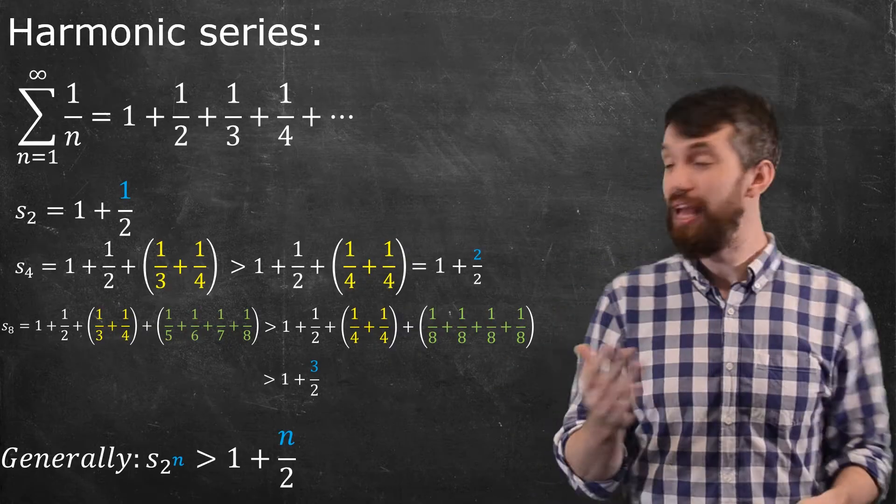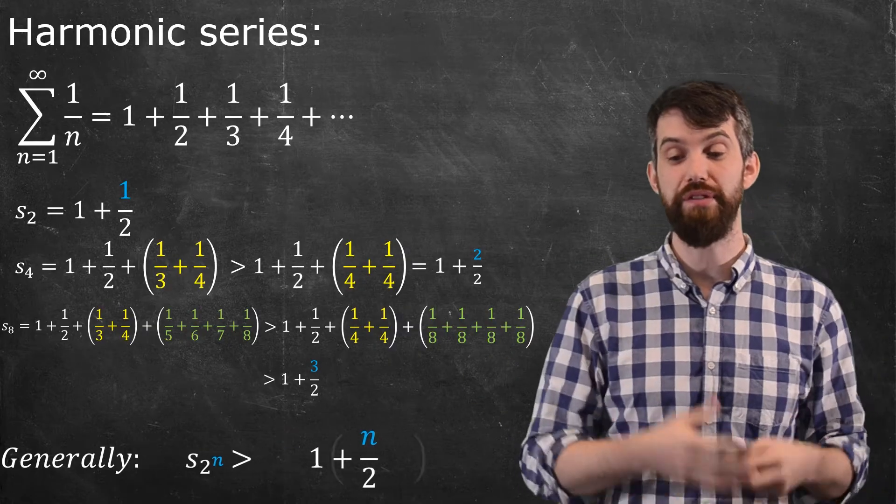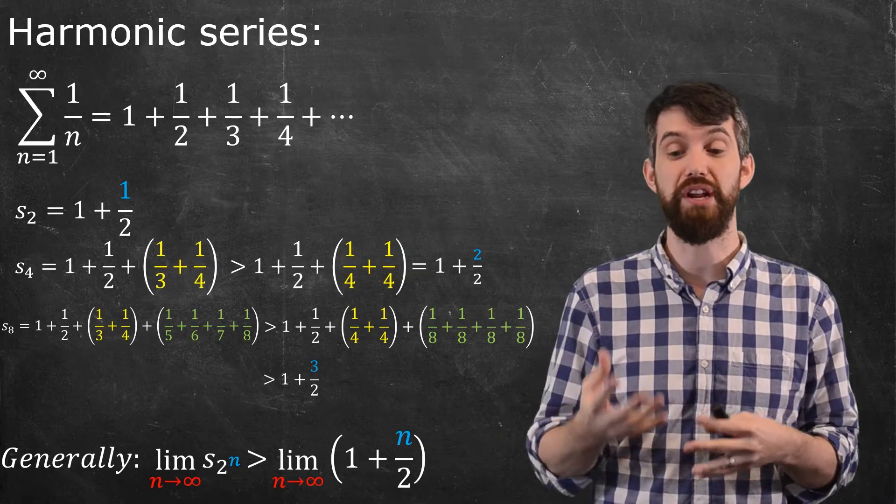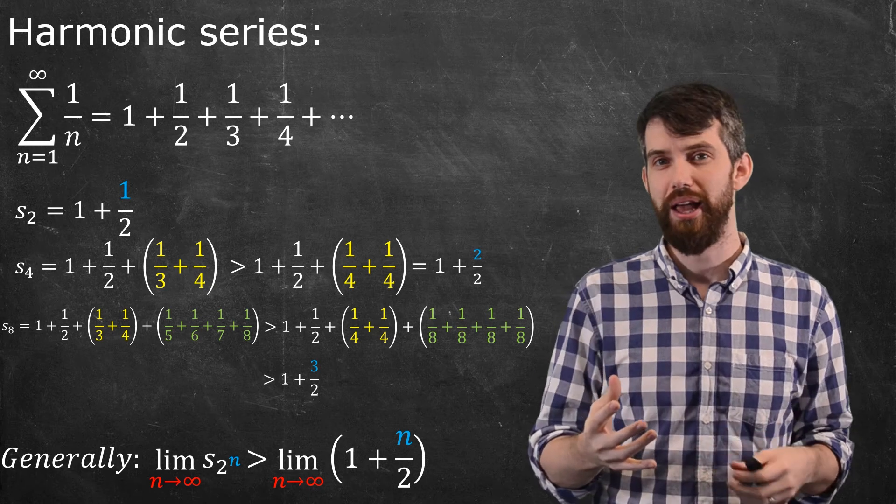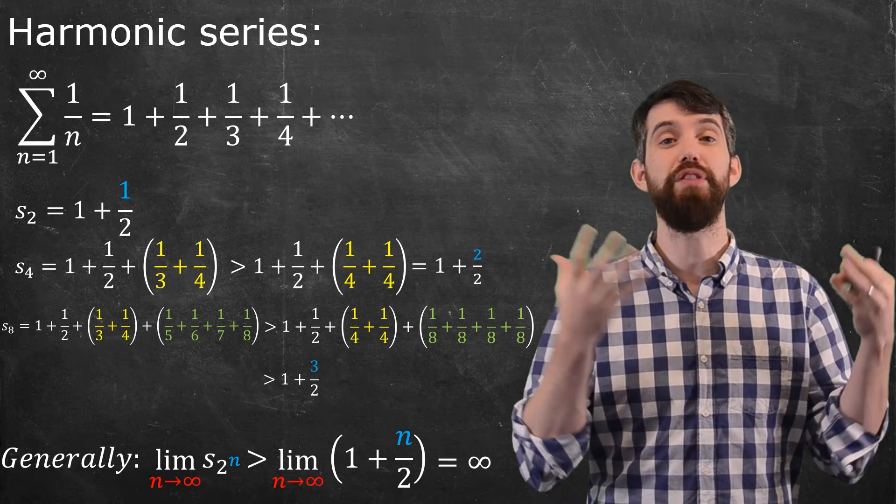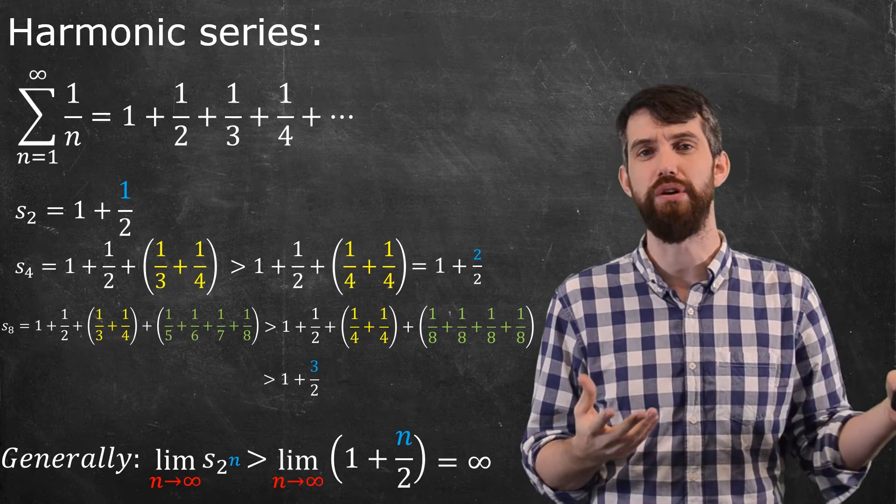So let's take that limit. Let's put limit signs in front of this s sub 2n, which is the same thing as being bigger than the limit as n goes to infinity of this one plus n over two. The right-hand side diverges to infinity. And so the limit of the partial sums, or at least these restricted ones, diverge.